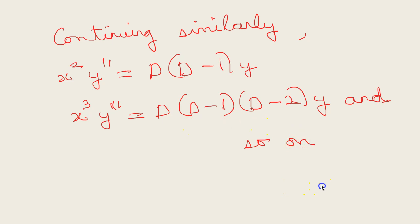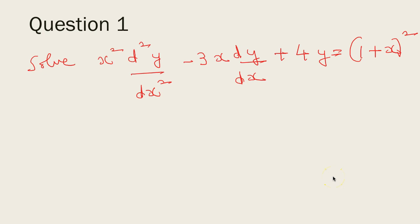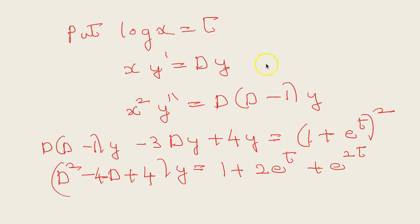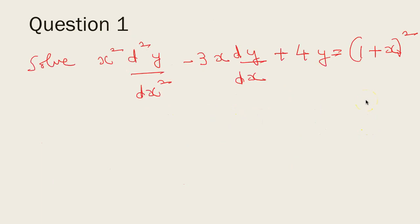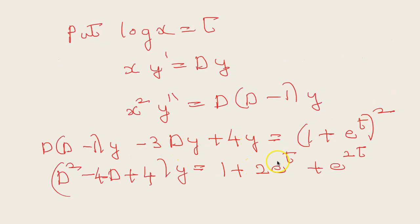First question: solve x²(d²y/dx²) − 3x(dy/dx) + 4y = (1 + x)². This is a Cauchy's equation, so we put log x = t. As established, xy' = Dy and x²y'' = D(D−1)y. Substituting into the equation gives D(D−1)y − 3Dy + 4y = (1 + e^t)², since log x = t means x = e^t. Simplifying: (D² − 4D + 4)y = 1 + 2e^t + e^(2t).